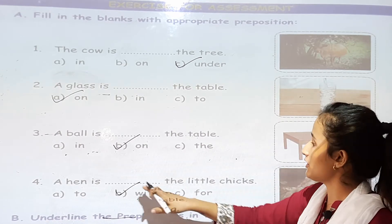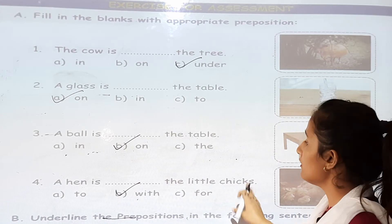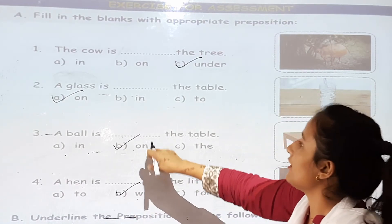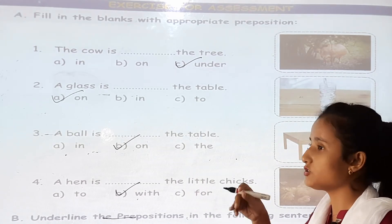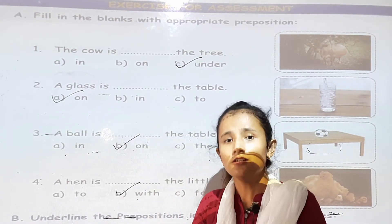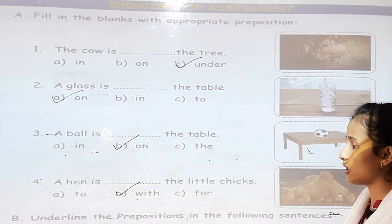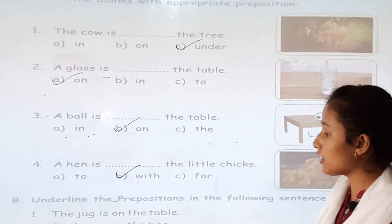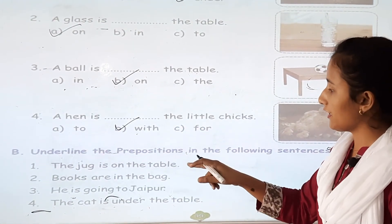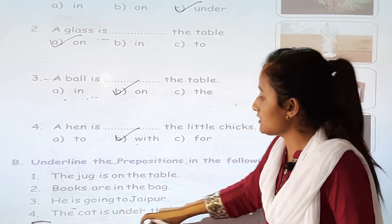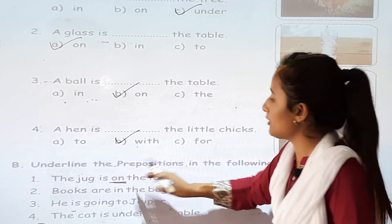So it shows the relations of two things — a hen and chicks. The words 'with', 'on', and 'under' all show the relations of nouns. Prepositions show the relations of a noun and a pronoun. For example, the jug is on the table — jug is a noun and table is also a noun, and 'on' shows the relation between them — 'on' is a preposition word.